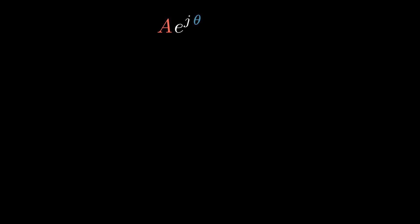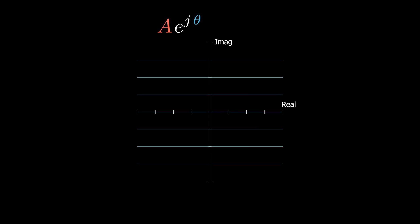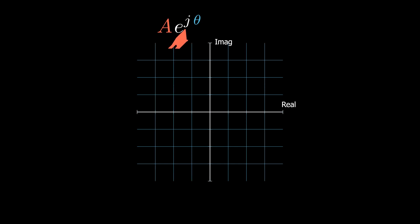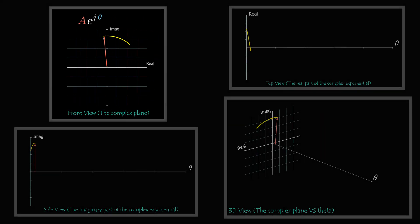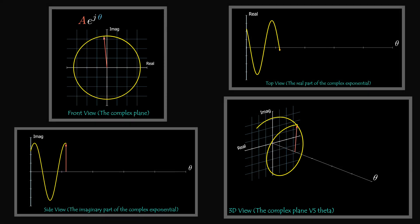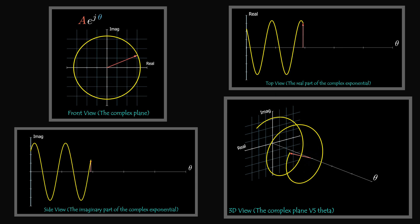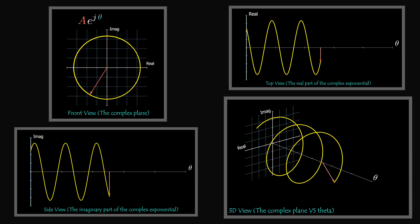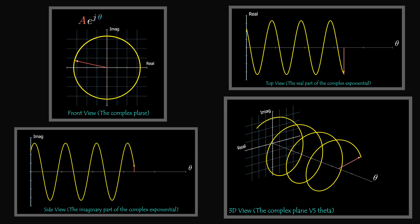E to the j theta is the polar form of some complex number, represented in a complex plane as a vector with magnitude and phase. If theta is variable, then by sweeping theta the phase angle changes and the vector rotates. If the third axis here represents the phase, then the rotation happens while the vector is moving along the third axis to form that spiral shape. This is the complex exponential function.